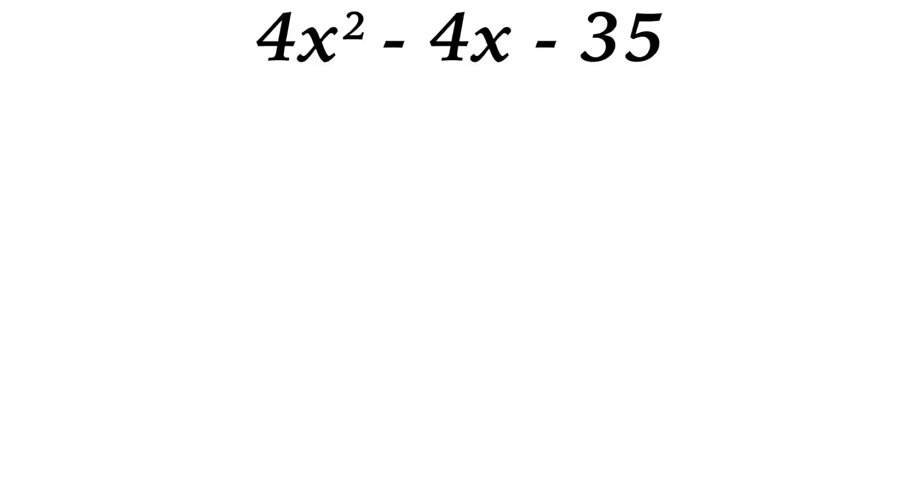So let's work through another example. This one, 4x squared minus 4x minus 35. The first thing that we do is we remove the leading coefficient and the last term. So we're left with x squared minus 4x.